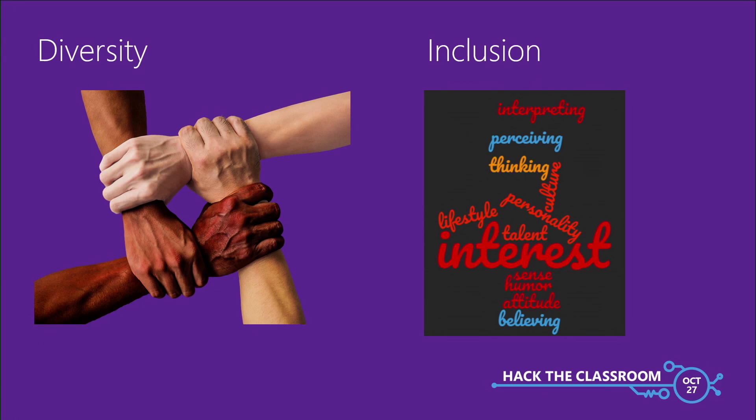That recognition and realization is probably the number one thing we can do to address diversity and inclusion in the world. When a student looks in a computer science classroom, he or she is looking to see if there's someone they can connect with. If they only see one type of person, the student is not going to walk through the door — and you're also only going to attract one type of student. So why does having an inclusive and diverse population in your computer science classroom necessarily make for a better computer science experience? That's a fair question.